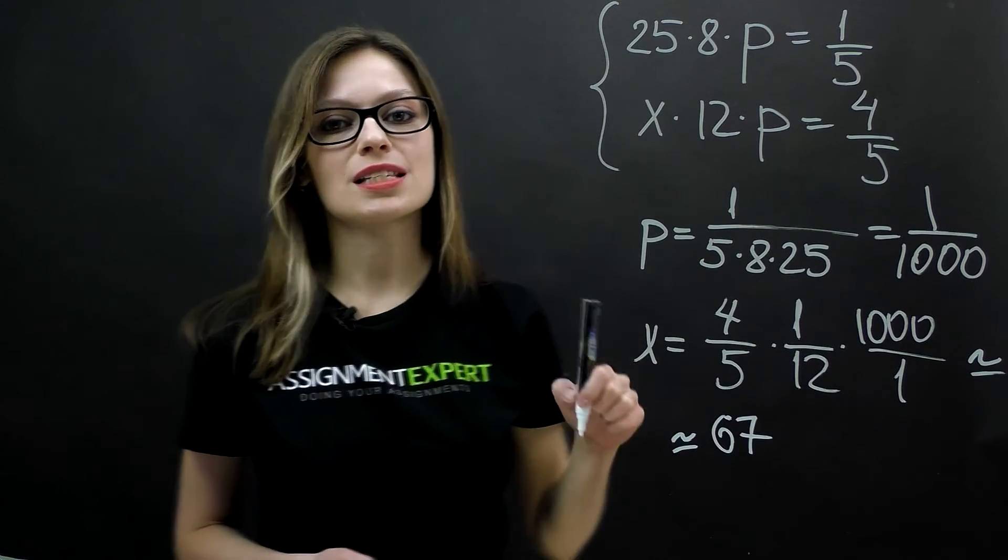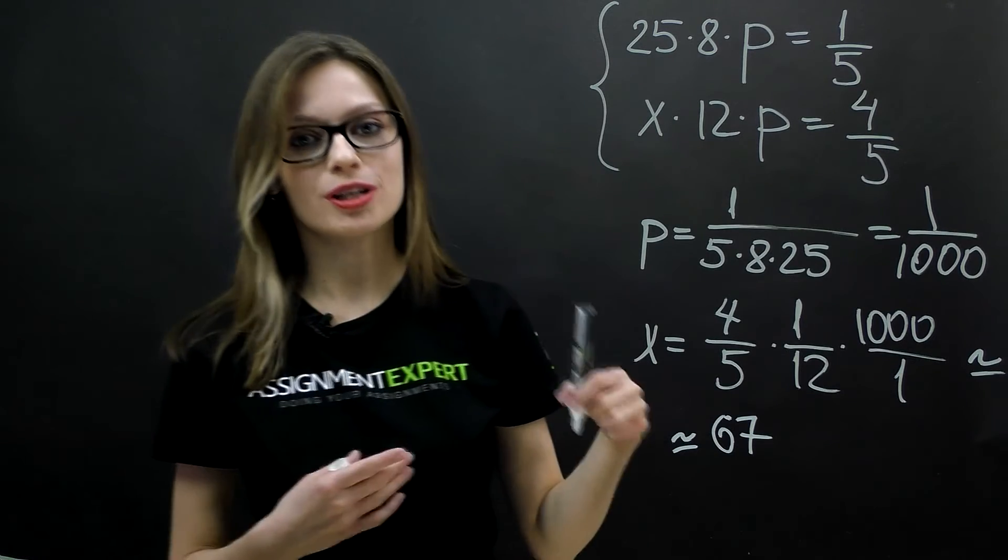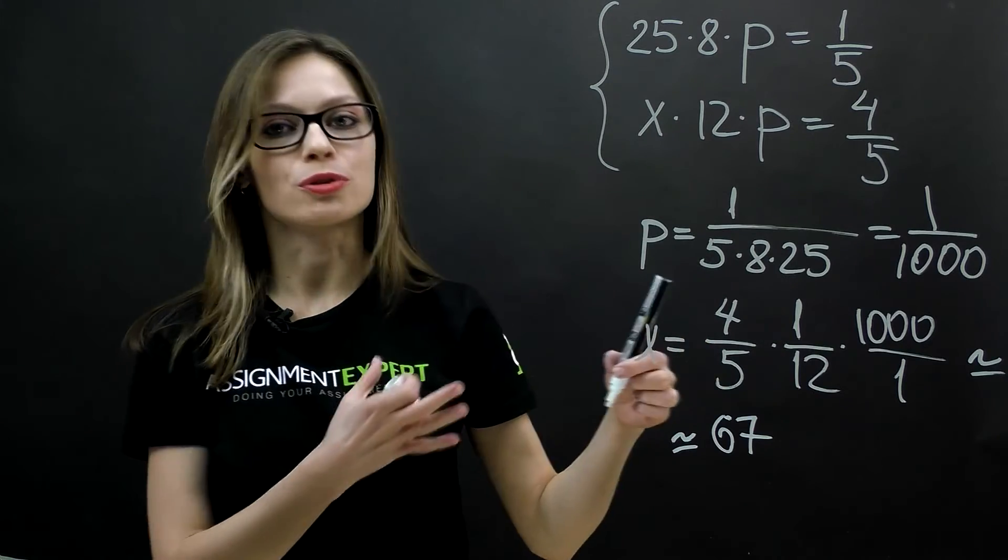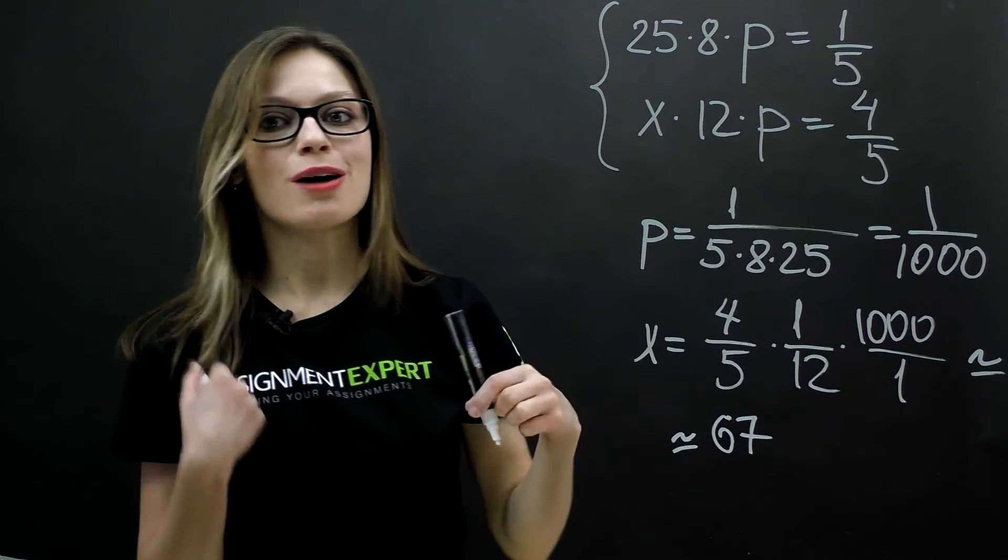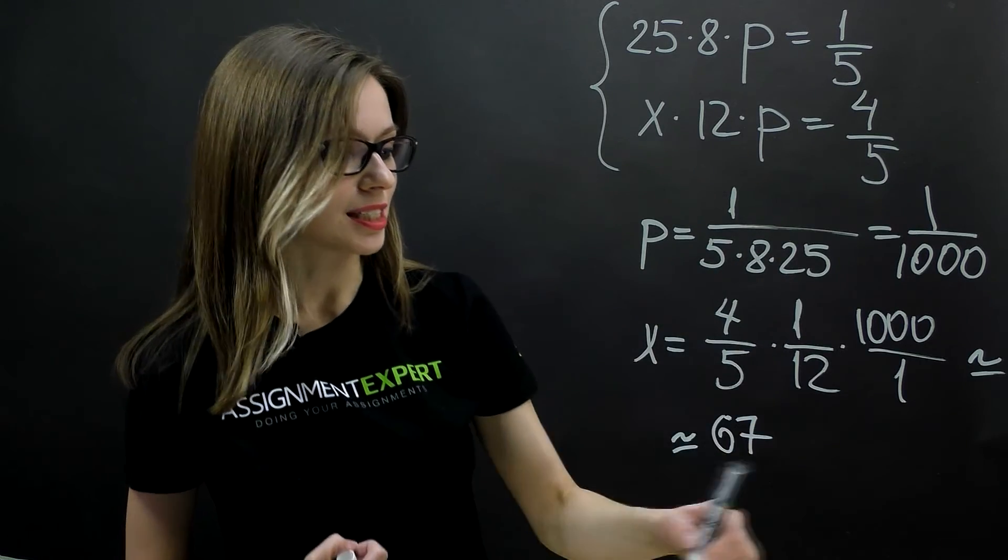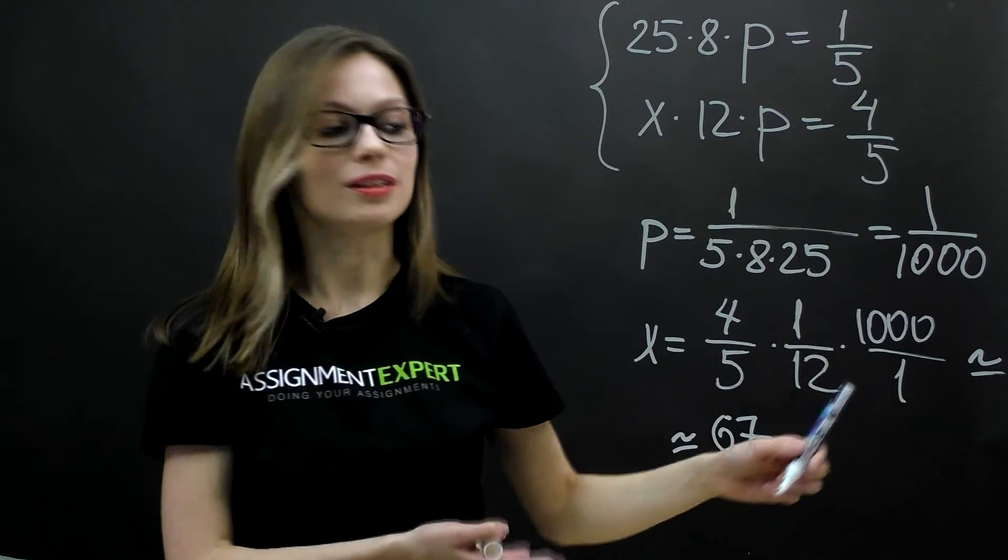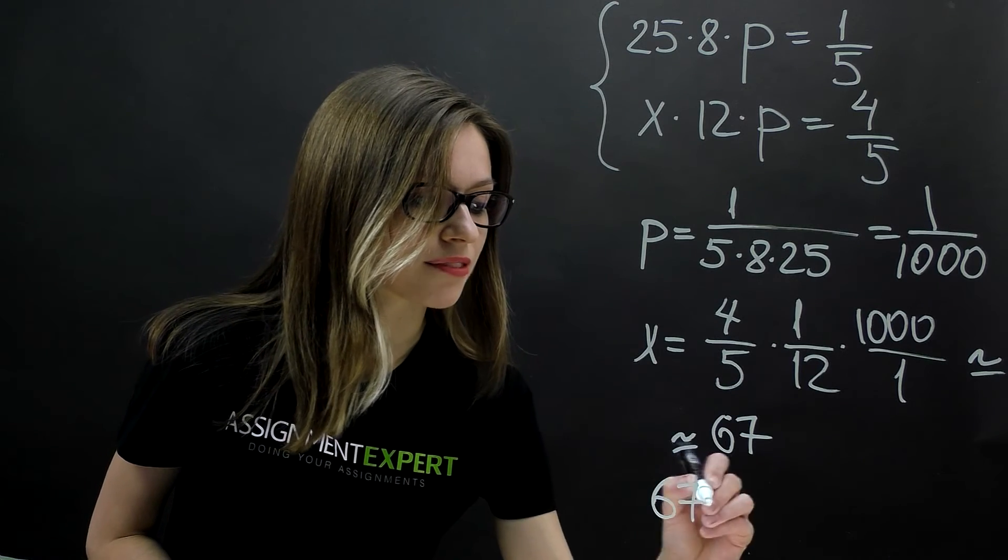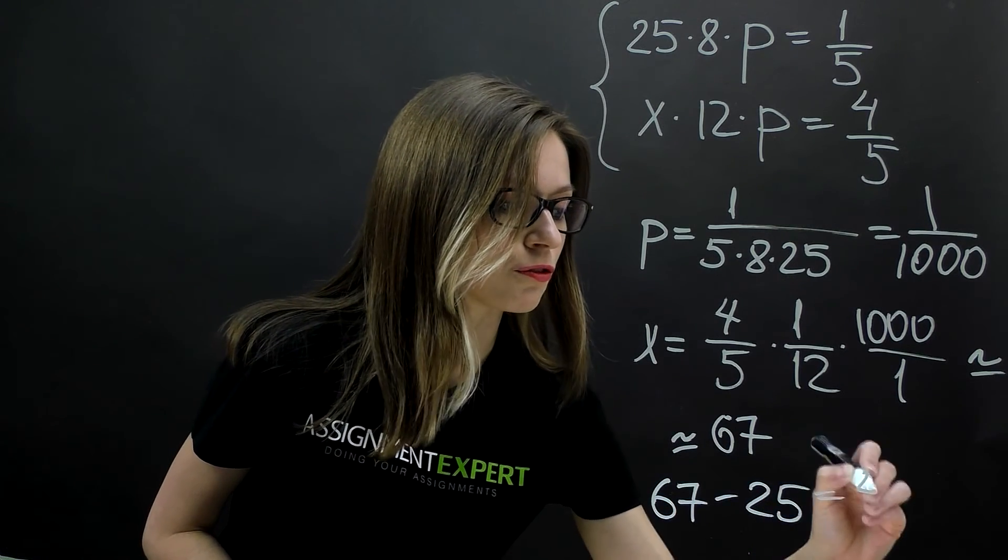But the question in the task was the number of additional workers that should be hired. And x is the total number of workers involved in the second part of the project. So the answer to our question would be 67 minus 25 workers that have already been hired. So our answer is 67 minus 25 and that is equal to 42.